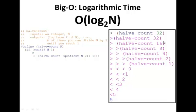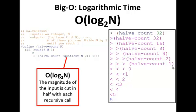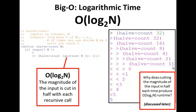If you look at the trace on the right, we start off at thirty-two, then sixteen, eight, four, two, one. Instead of having thirty-two recursive calls, each time I cut it in half. We're going to refer to this as logarithmic time, where the magnitude of the input is cut in half with each recursive call.